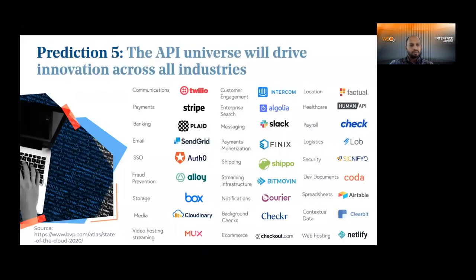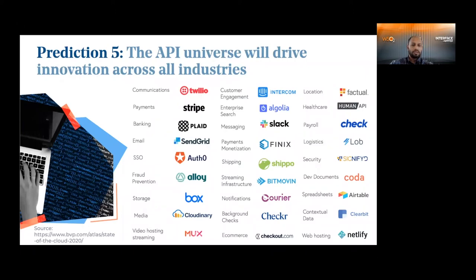They've also made predictions about certain aspects in the IT field, one of them being that APIs will drive innovation across all kinds of industries, which I think is true. As you can see here, we have APIs today for almost doing anything. What you see on your screen is basically a categorization of different API providers in different industries — there's Twilio for communication, Stripe for payments, Plaid for banking, and tons of API providers like these who operate in different kinds of industries. That is a great thing for the API industry.